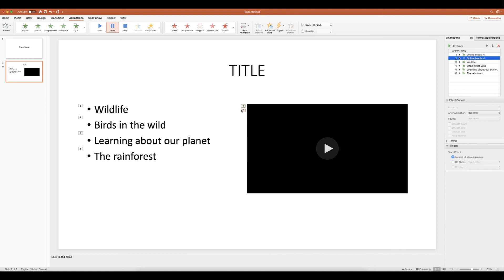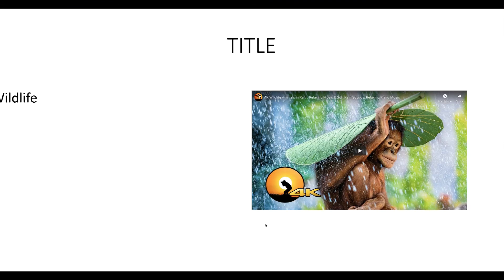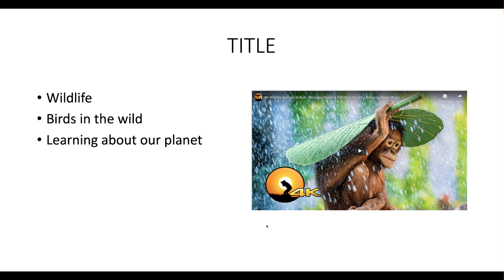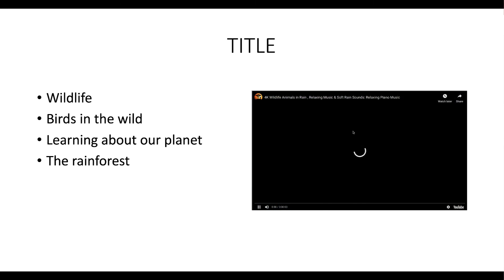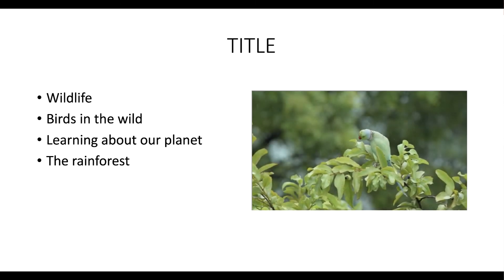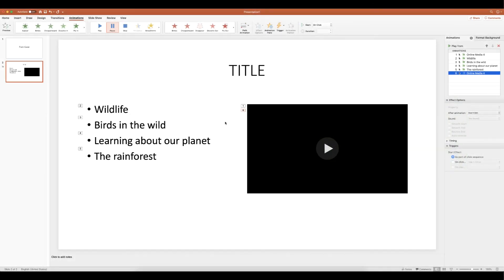Now number one is the video appearing and number two is the video playing, followed by all the bullet points. If you wanted the video to play at the end of the bullet points instead, just click on the pause icon item and drag it to the bottom. That means the video will play after the final bullet point. So: the title appears, the video comes in, you discuss points about the video with bullet points arriving one by one, and finally the last click plays the video. I hope that's helped — please subscribe and have a great day!